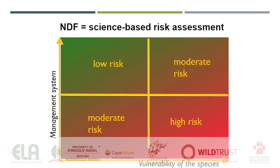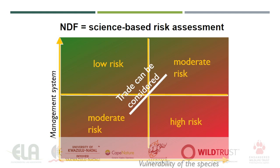An NDF is a science-based risk assessment in which the vulnerability of the species is assessed in relation to how well it is managed. For species with low vulnerability and a strong management system, there is a low risk of unsustainable use and trade can generally be considered. For highly vulnerable species subject to poor management, there is a higher risk of unsustainable use and trade is typically not recommended.